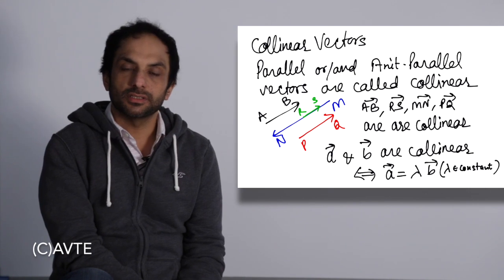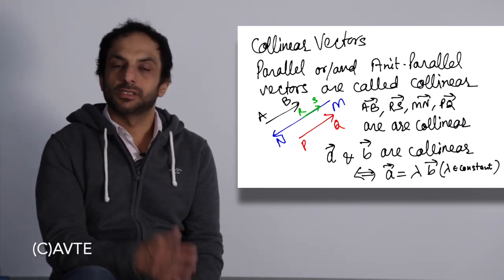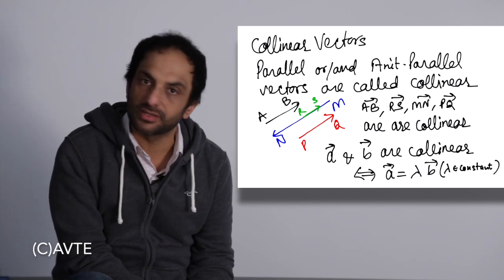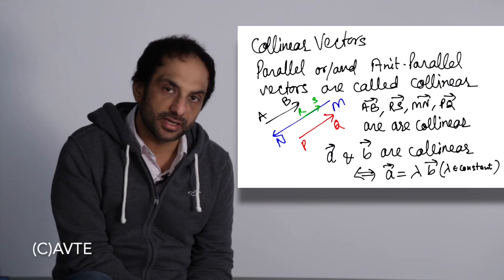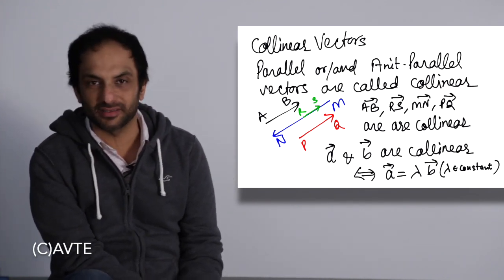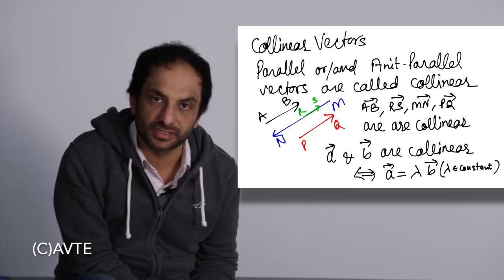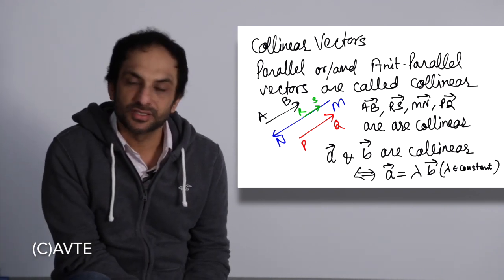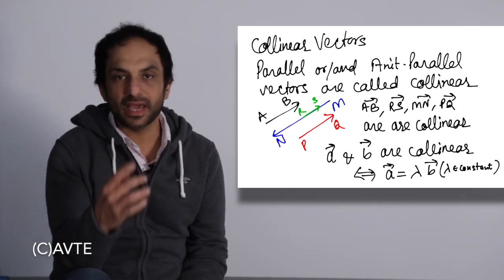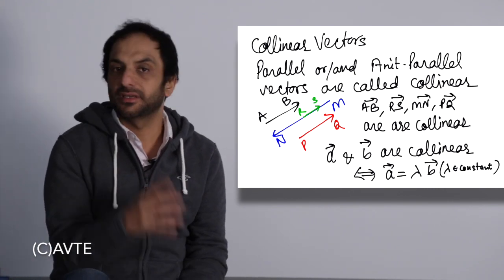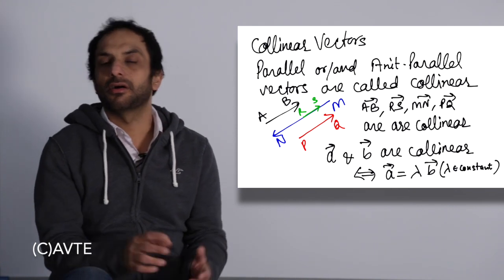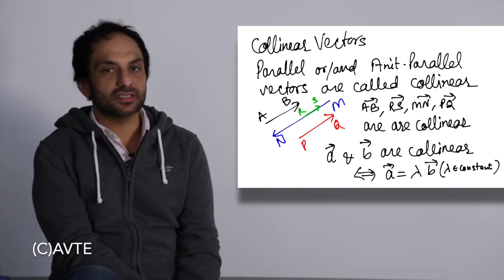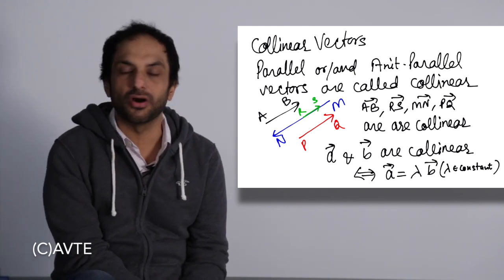Collinear vectors should not be confused with collinear points — we are talking about collinear vectors. When the vectors are like or unlike, that is parallel or anti-parallel, then collectively they are called collinear vectors. So if the vectors are collinear, they may be parallel or anti-parallel. Whenever there is a ratio in terms of magnitude between vectors — for example, if vector a is 5 times vector b or minus 7 times vector b — the vectors are called collinear.